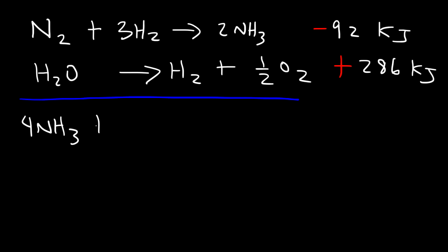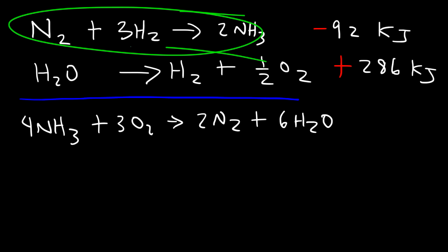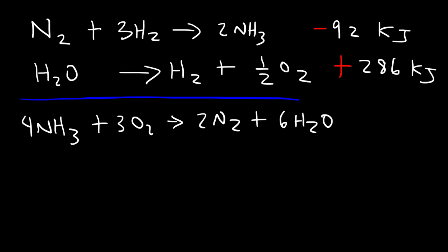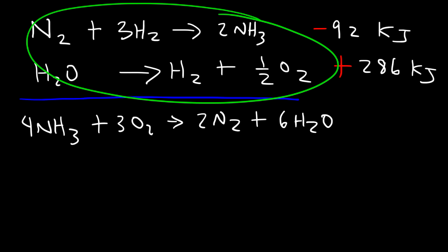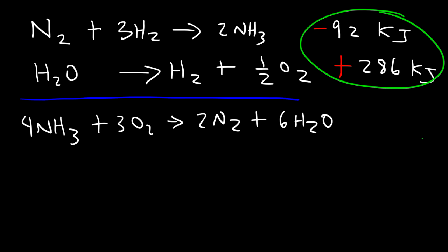The target reaction is ammonia reacting with oxygen gas to produce nitrogen gas and water. Hess's Law states that we can adjust these reactions to get the enthalpy change of this target reaction. We adjust the two given reactions so that when we add them we get the target reaction, then adjust the ΔH values accordingly — adding those numbers gives us the enthalpy change for the target reaction.